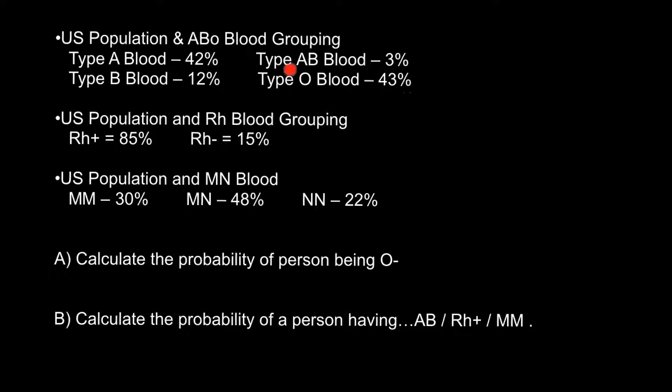About 43% belong to blood group O. There are also two RH factors: RH positive at about 85% of the population, and RH negative at about 15%. The third blood group characteristic is the MN blood group: about 30% belong to genotype MM, about 48% belong to genotype MN.